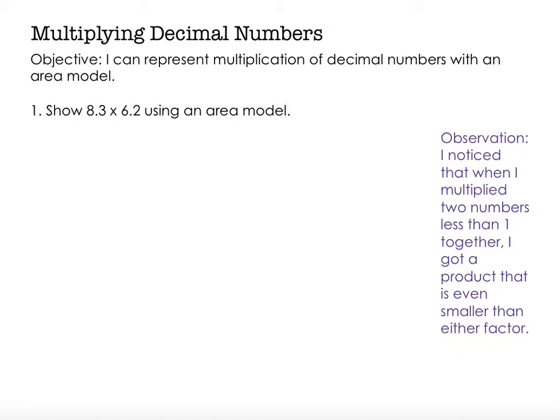Show 8 and 3 tenths times 6 and 2 tenths using an area model. Notice on the right I still have an observation that I brought from my previous video. The observation says I noticed that when I multiply two numbers less than one together, I got a product that is even smaller than either of the two factors. So I wanted to hold on to that observation because I think I will encounter that since I have two numbers that have decimal parts, 3 tenths and 2 tenths.